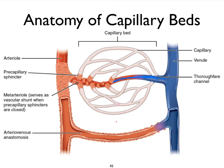An arteriole will feed into the capillary bed, and once it's giving rise to capillaries, we refer to that arteriole very often as the metarteriole. That metarteriole is then going to be referred to as the thoroughfare channel once oxygen and carbon dioxide exchange has occurred and we're on our way to a venule — a post-capillary venule.